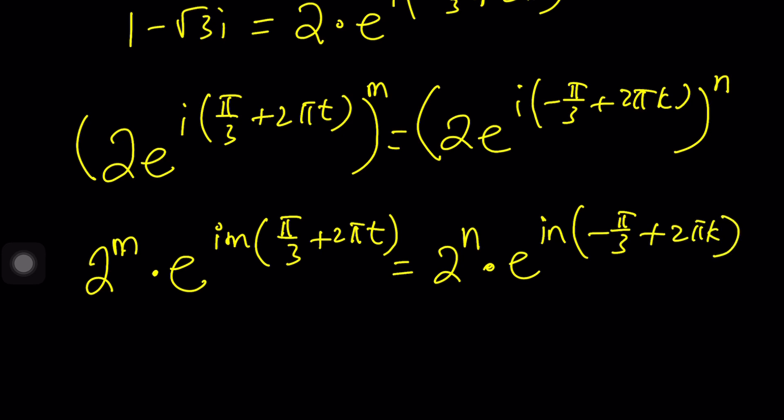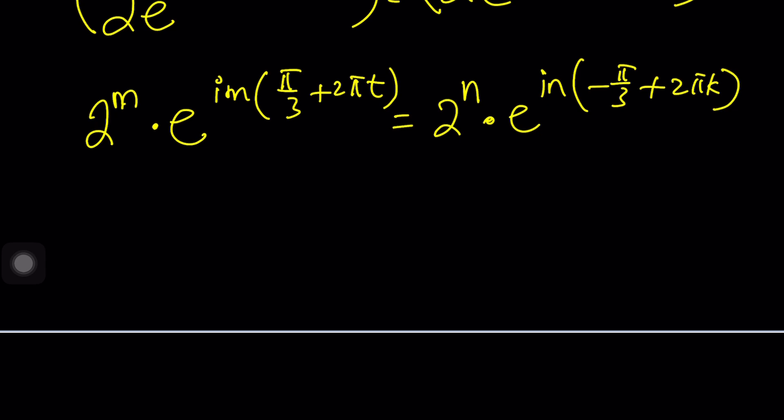Awesome. Now what do you do with this? Well first of all notice that 2^m needs to equal 2^n. So that kind of means that m equals n, right? Can we find a solution where m and n are different?